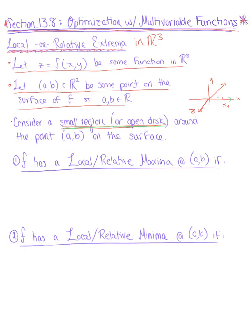So here are our two definitions. We have that f is a local or relative maxima if the following holds true. If f(x,y) is less than or equal to f at that point (a,b),